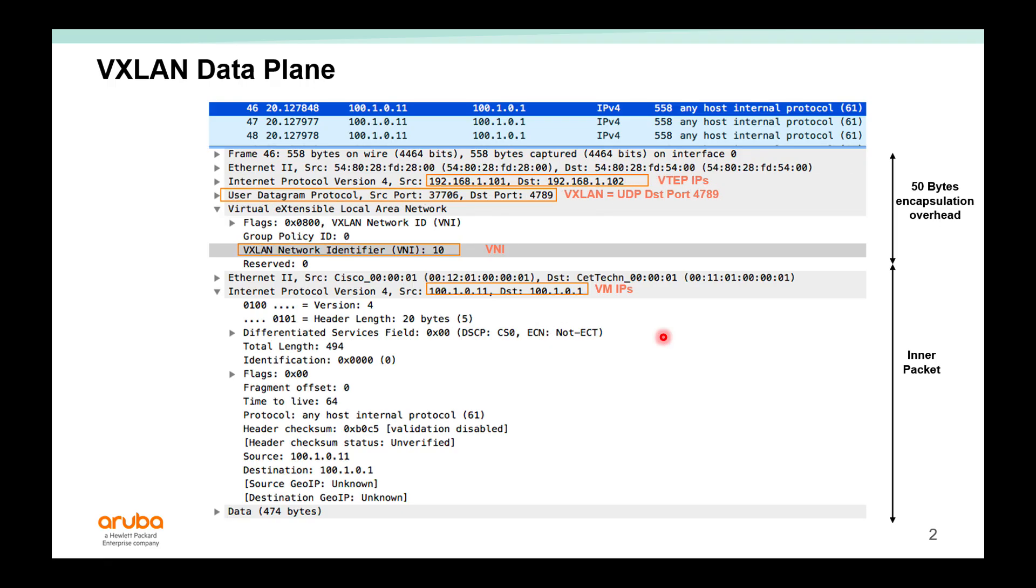In this video, let's take a look at some VXLAN EVPN Wireshark captures and how VXLAN load shares traffic across multiple physical links. This is the VXLAN data plane capture of traffic between VMs 100.1.0.11 that communicates with 100.1.0.1. This is shown here - the source and destination IPs, the MAC addresses. There's the inner packet and the VXLAN encapsulation.